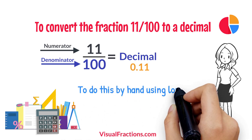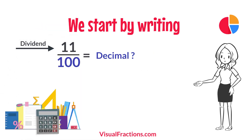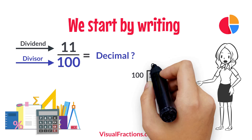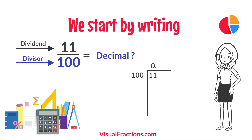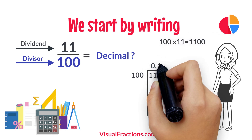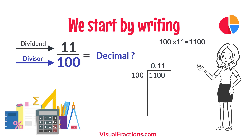To do this by hand using long division, we start by writing 11 as the dividend and 100 as the divisor. Since 100 doesn't fit into 11, we add a decimal point in our answer and append two zeros to 11, making it 1100. How many times does 100 go into 1100? Exactly 11 times. We write 11 after the decimal point in the quotient, making it 0.11.